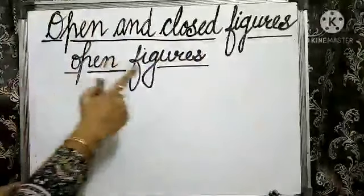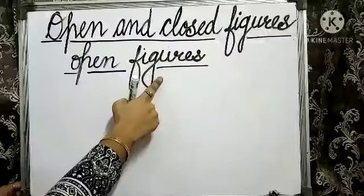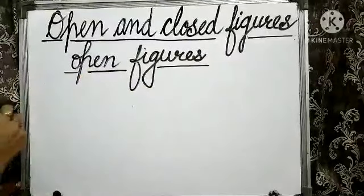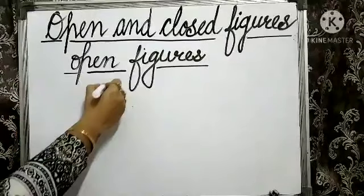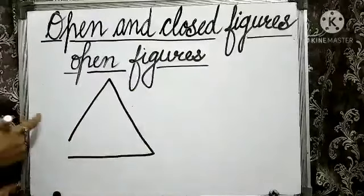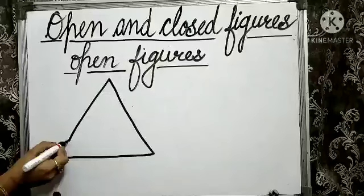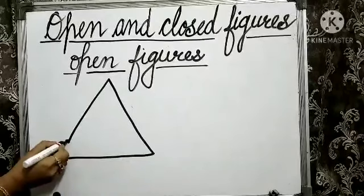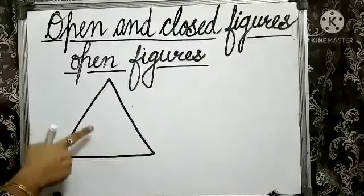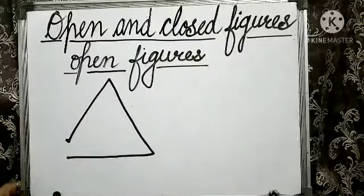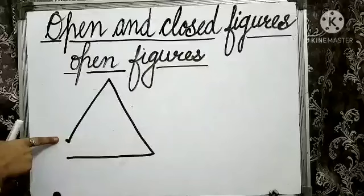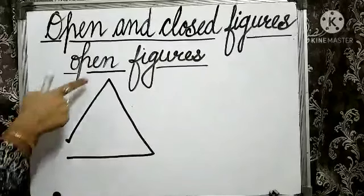Children, figures having different end and starting points are called open figures. Look at the figure here. I have drawn a triangle. It starts from one point and it ends at the other point. So it is an open figure.